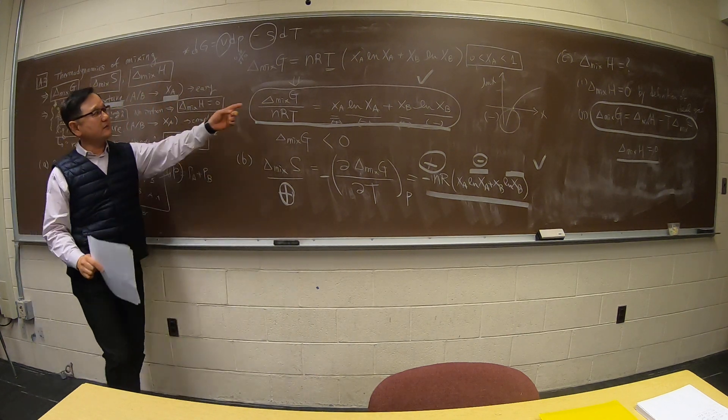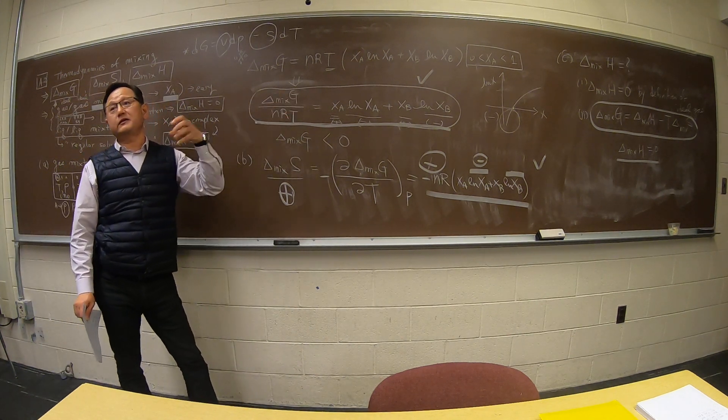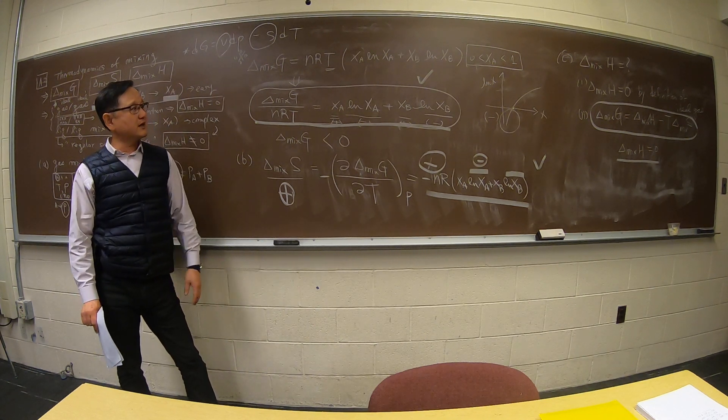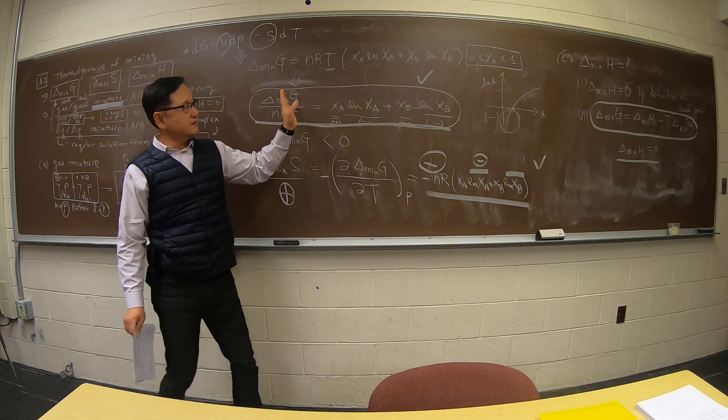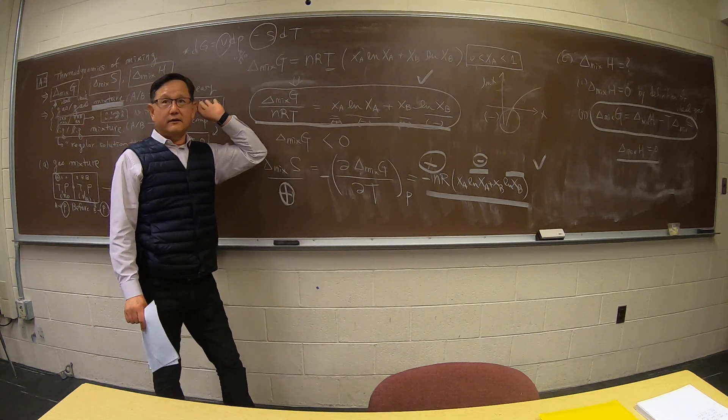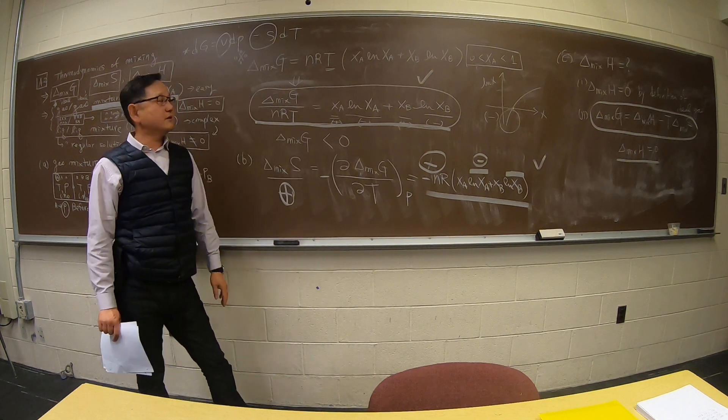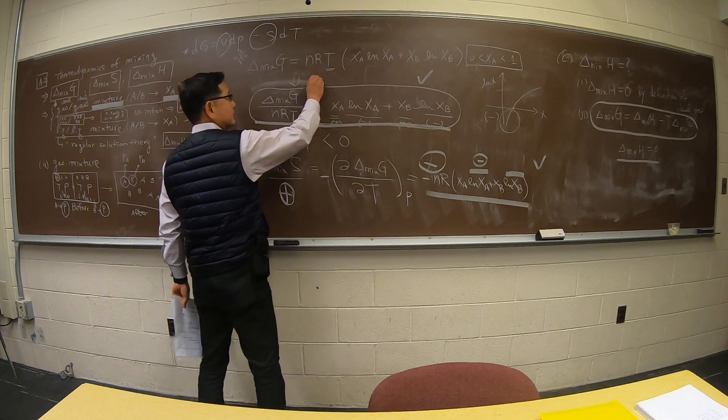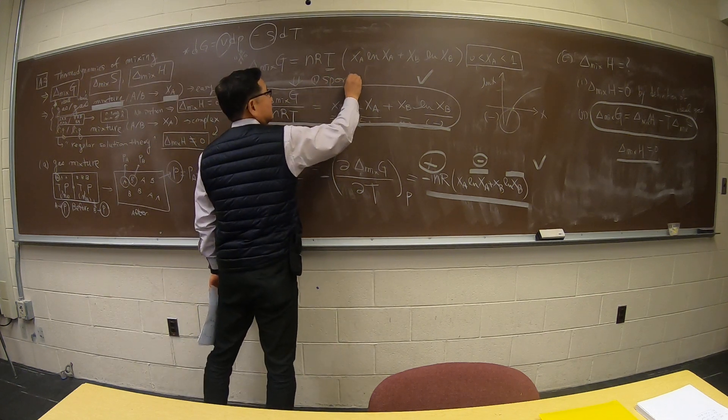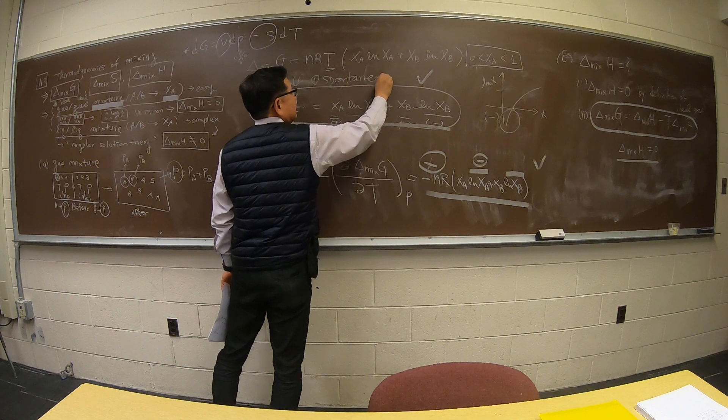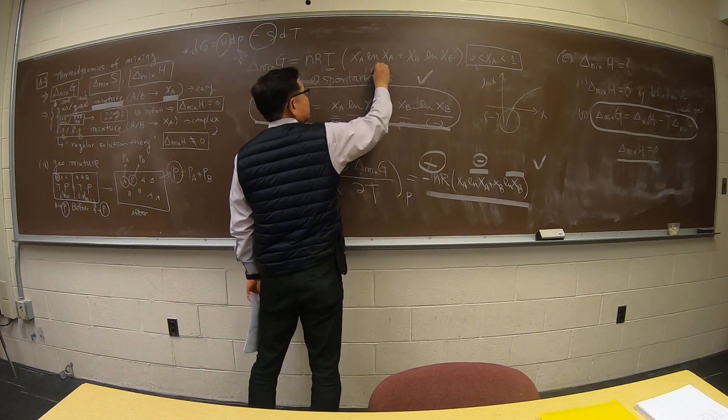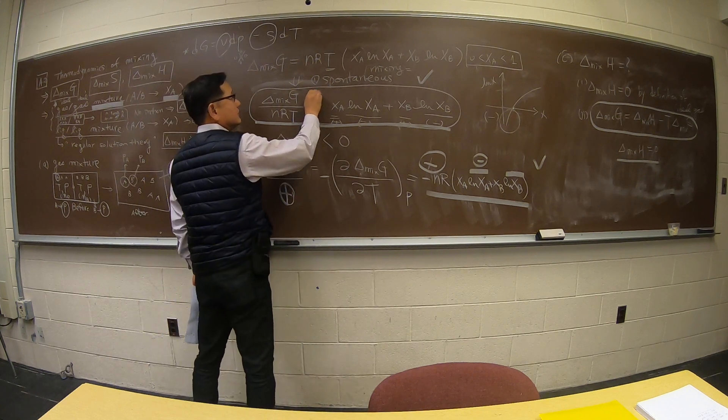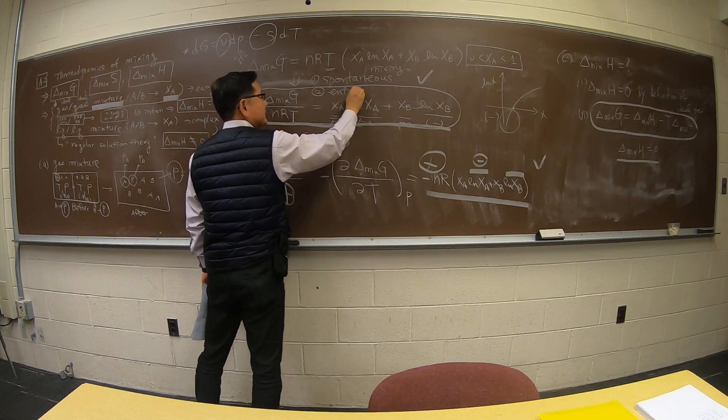So delta G mix, which is a full description of mixtures - what is the energy change of mixing, whether the mixing is spontaneous or not. One thing about the gas: it's always negative. There's always spontaneous mixing for the gas. And not only that, that's number one. Mixing is spontaneous for the gas. Number two, this is what is called entropy driven.